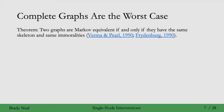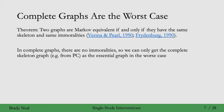This theorem tells us that immoralities are really important — they're the only things that allow us to orient edges in the graph from observational data. The Markov equivalence class, represented by the essential graph, will have some edges oriented if there are immoralities. But in complete graphs, there are no immoralities, so we can't orient any of the edges. The skeleton of a complete graph has an undirected edge between every pair of variables, and none of them are oriented.